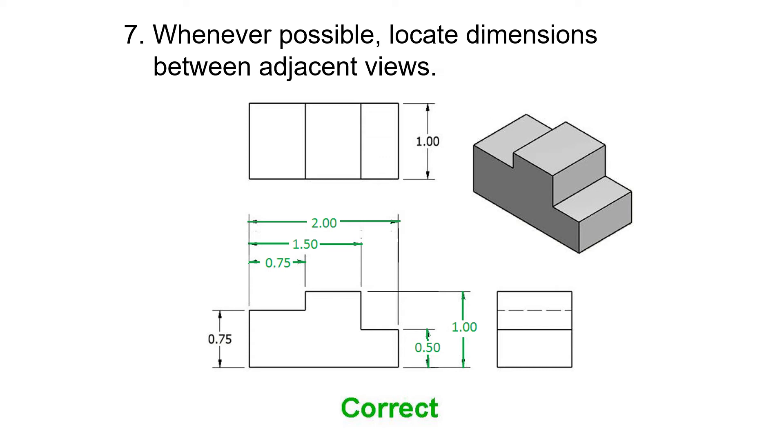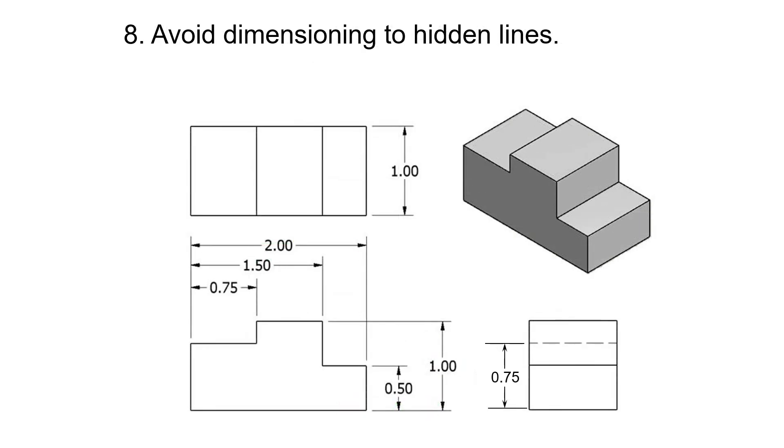But that only works if the dimensions are where they should be, in between those two views. If they're on the outside, you don't get that added benefit and it's harder to read your drawing. Avoid dimensioning to hidden lines. On the right side there, that's no good.